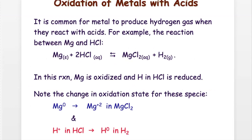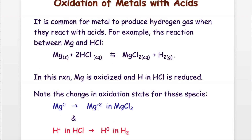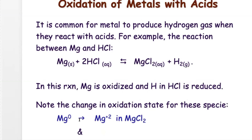Some reactions involve electron exchange. Whenever you're changing the charge of a species, electron exchange is happening. For example, with the oxidation of magnesium: magnesium goes from neutral to plus two, so there is electron transfer. The reaction is the oxidation of magnesium and the reduction of hydrogen — hydrogen goes from plus one to zero. The two half-reactions show that magnesium is the reducing agent and hydrogen is the oxidizing agent.